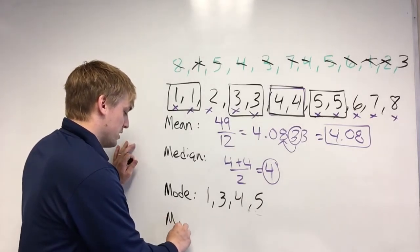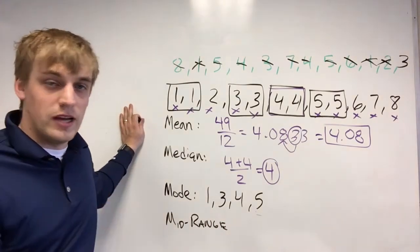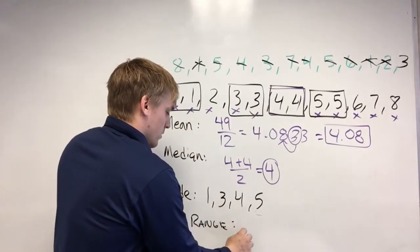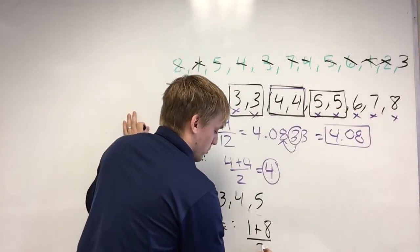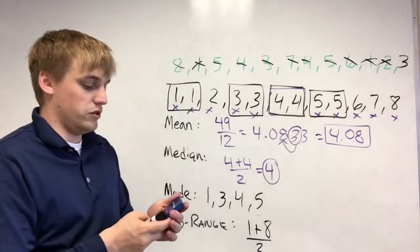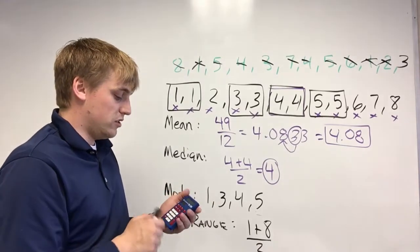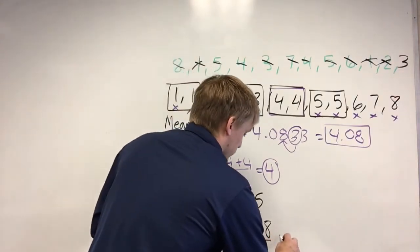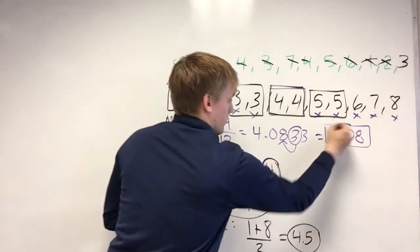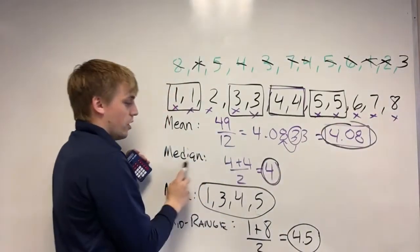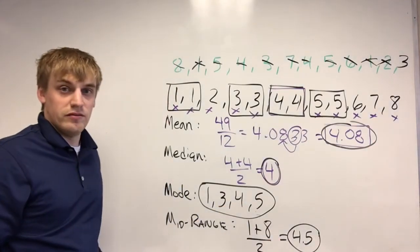Our last measure of central tendency is mid-range. That's when you take the greatest number and add it to the smallest number and divide by two. Our smallest number is one, our biggest is eight — one plus eight is nine, divided by two is 4.5. So our mid-range is 4.5.